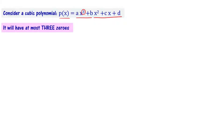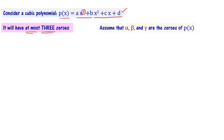A cubic polynomial has at most three zeros. In the event the cubic polynomial is P of x equals 0, let alpha, beta, and gamma be the zeros of P of x.